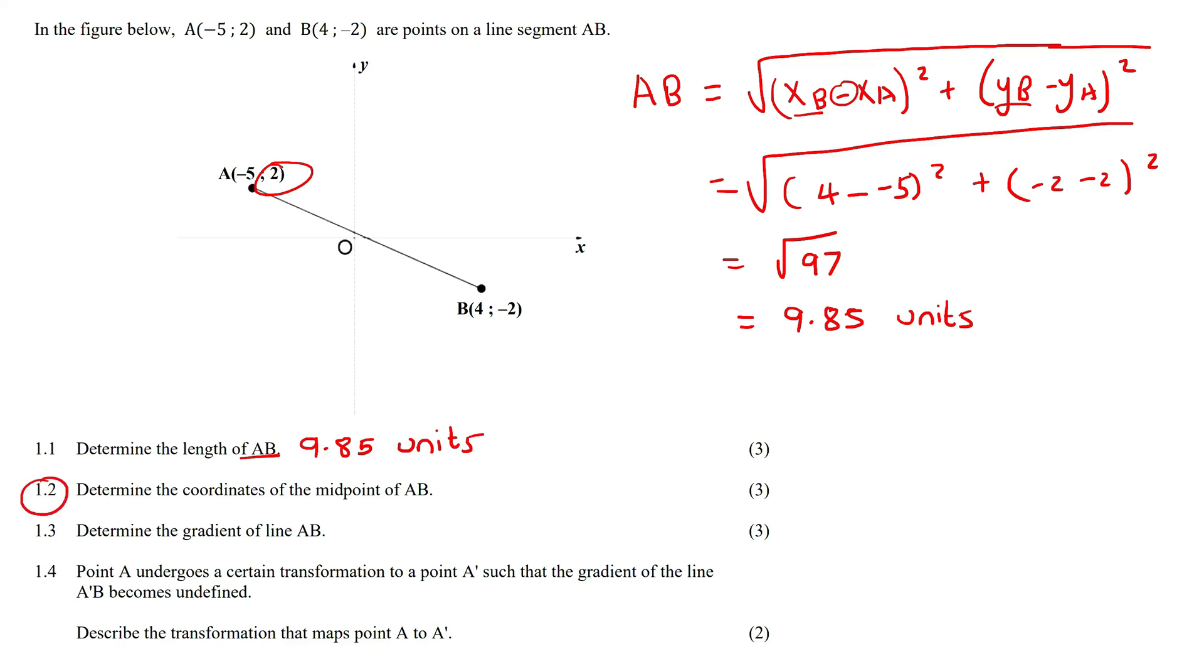This one says determine the coordinates of the midpoint. For midpoint we use a capital M, and the formula is: you add the x values together, so it's the x value of point A plus the x value of point B divided by 2, and then the y value of point A plus the y value of point B divided by 2.